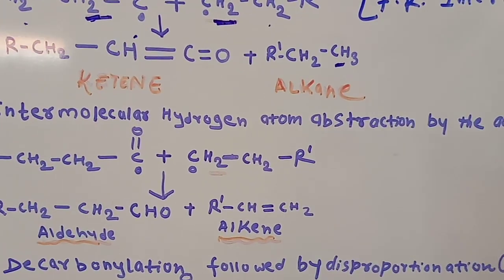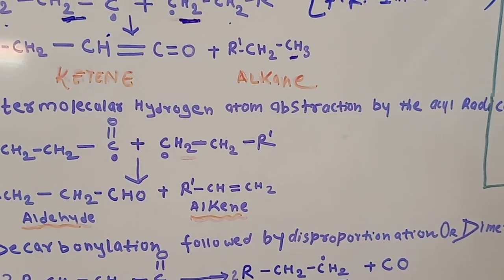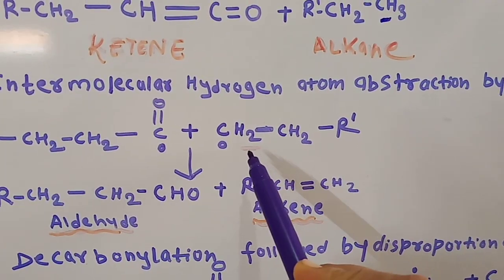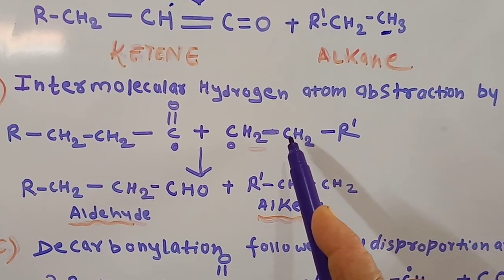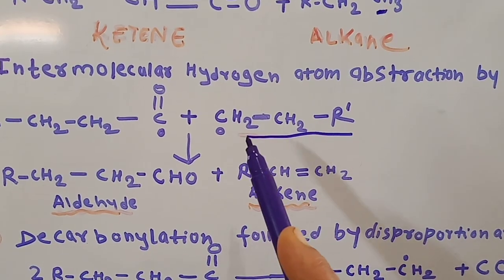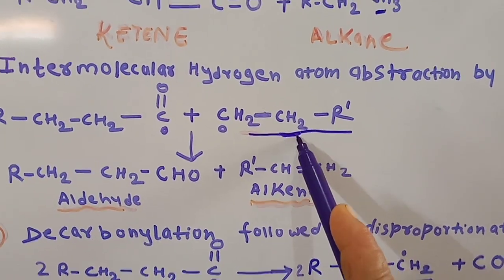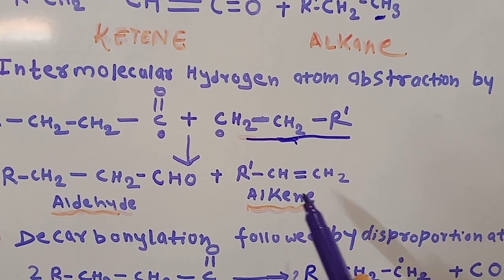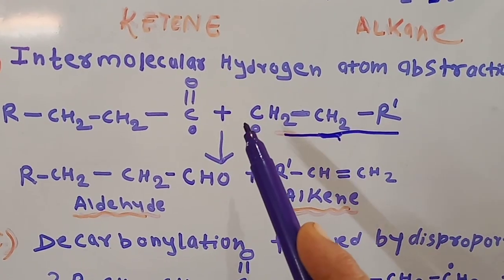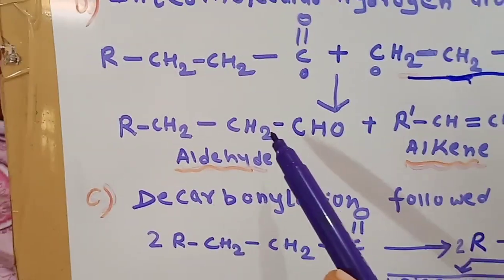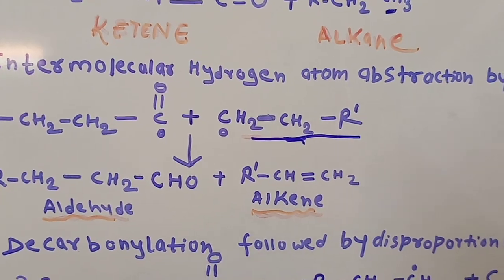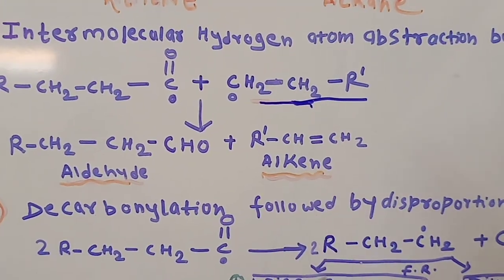The second process is intermolecular hydrogen atom abstraction by the acyl radical. Intermolecular means one atom is taken from another molecule. One hydrogen is abstracted from the free radical fragment, leading to formation of an alkene RCH=CH₂. This alkene gets attached to the carbonyl carbon to form a CHO group, meaning the ketone group is converted to an aldehyde. So intermolecular hydrogen abstraction by the acyl radical results in formation of an aldehyde and an alkene.